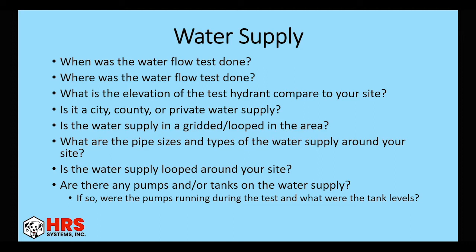Then if someone is supplying the water flow test for you, you need to know when it was done, where it was done, what the elevation of the test hydrant is compared to your site. Is it in a city, county or private water supply? Because these could all change how your water is delivered to your site and the supply. Is the water supply in a gridded or looped system around your site? Again, this can change how your water supply is provided to your site and whether you can come in from multiple directions.